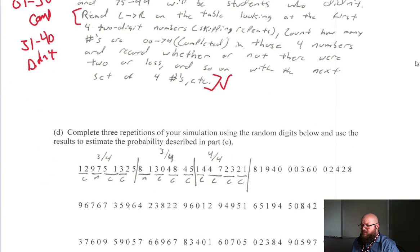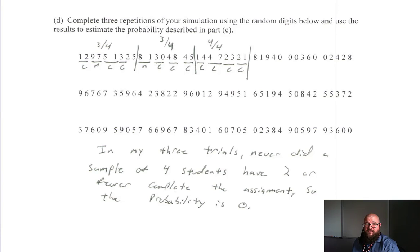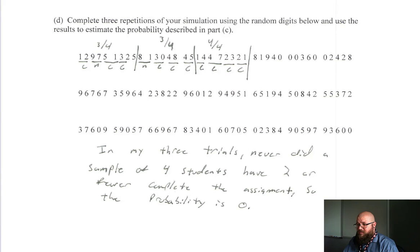Moving on to Part D: complete three repetitions of your simulation using the random digits below, and use those digits to estimate the probability described in Part C. Since they stuck with their initial setup of 00 to 74 and 75 to 99, that's fine — as long as they move forward consistently, they may not lose credit. They went through doing it the right way by skipping repeats, marking complete, missing, complete, complete, and so forth.